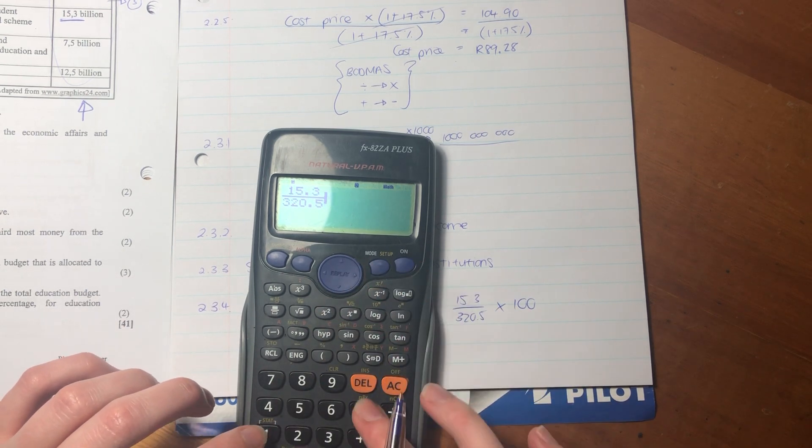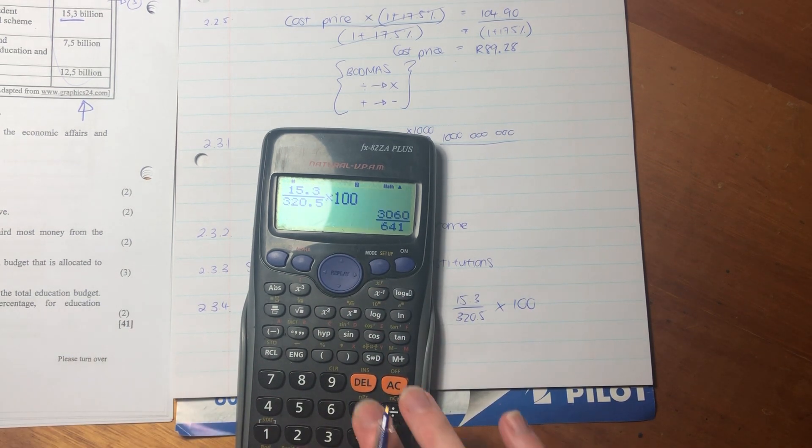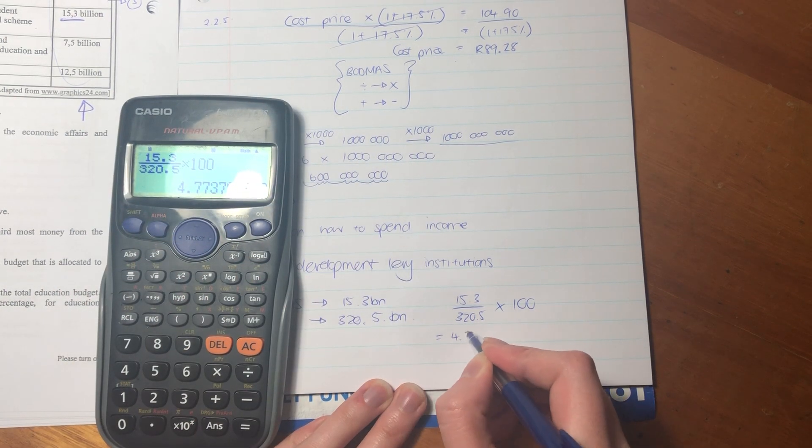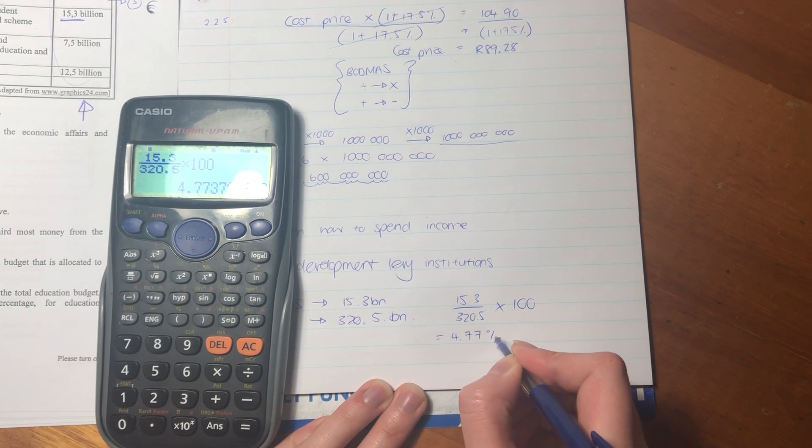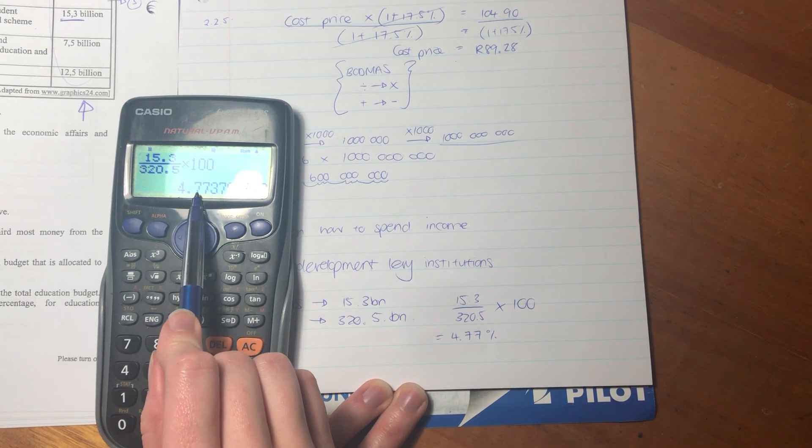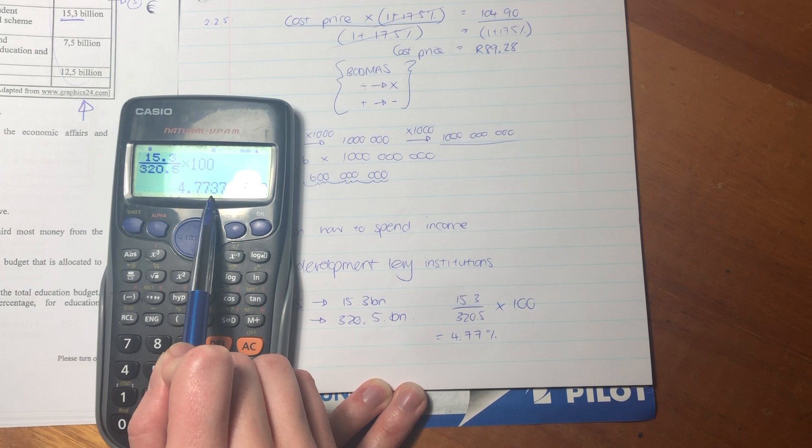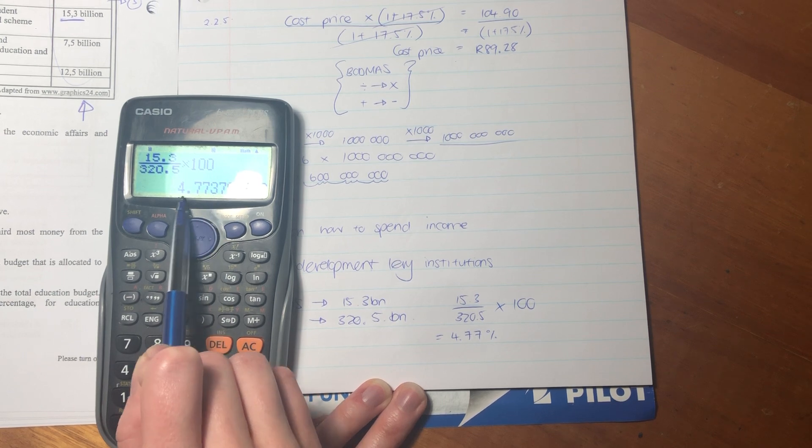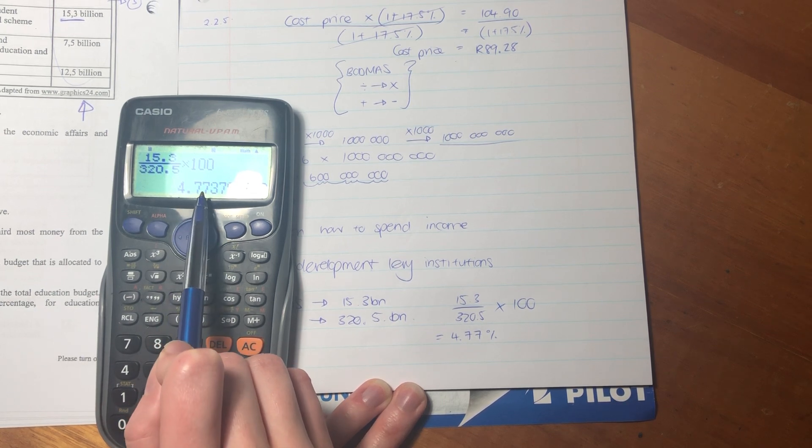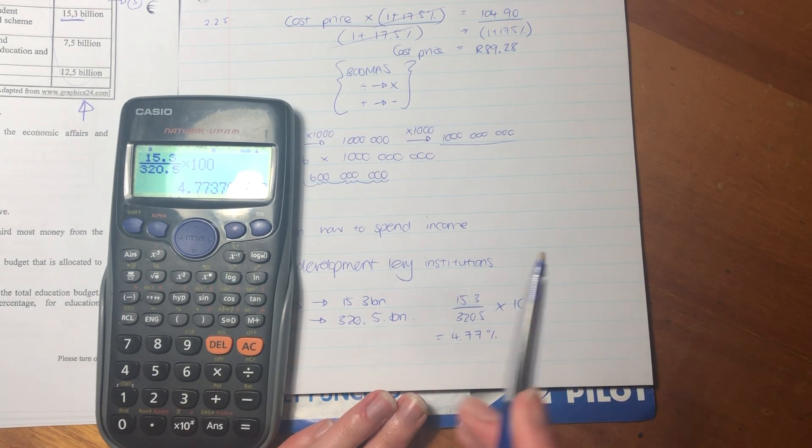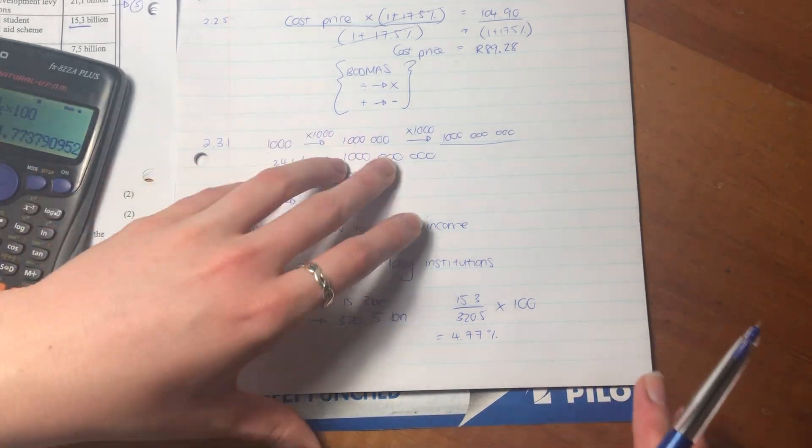So let's plug that into our calculator. Make sure you type it in correctly, otherwise you'll get funky things like I keep doing. So it's 4.77%. The reason it's 4.77 is because we rounded off to two decimal places. Three is below five, so we round it down. If it was five or above we would round it up, but in this case we round it down. So that is that question.